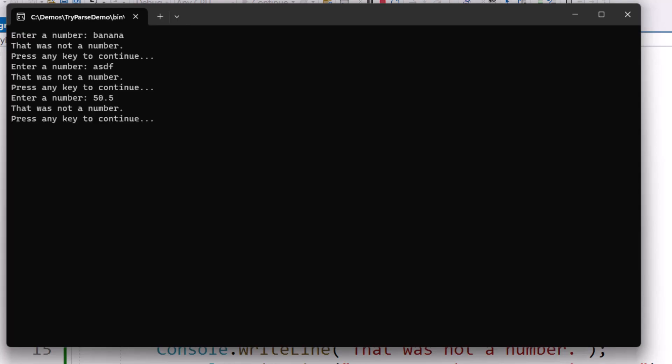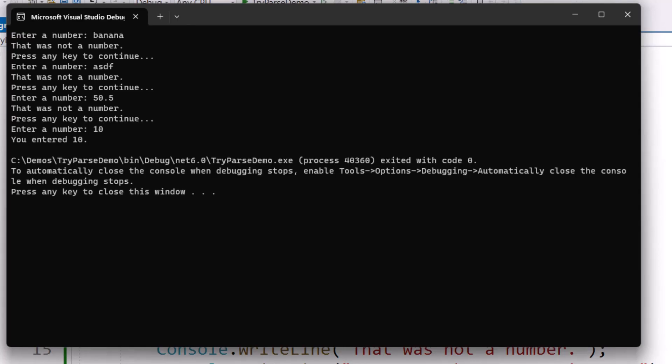Decimals are not integers. It will not accept that. So take note of that. And then if I put in a whole number like ten, it's happy. It leaves the loop, it prints it and the program ends.